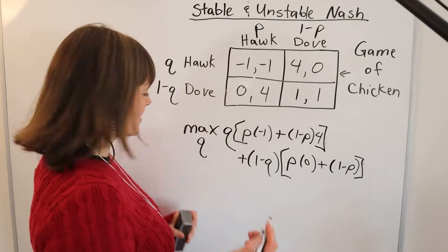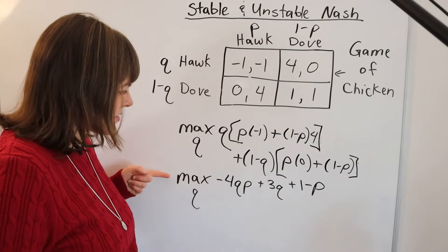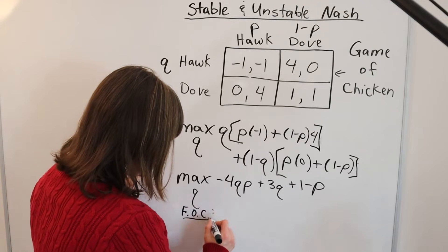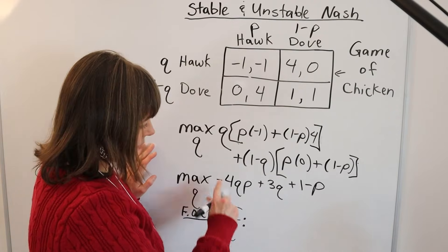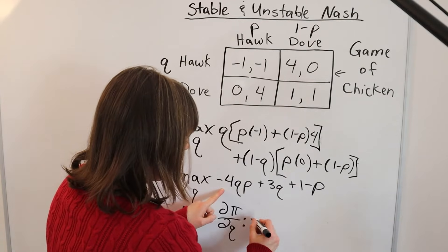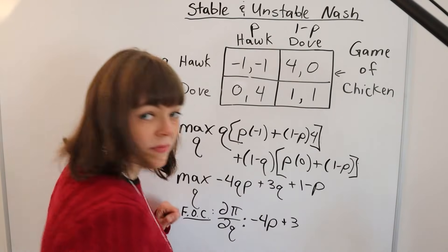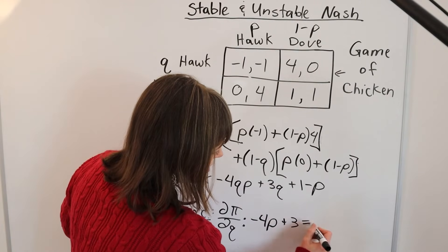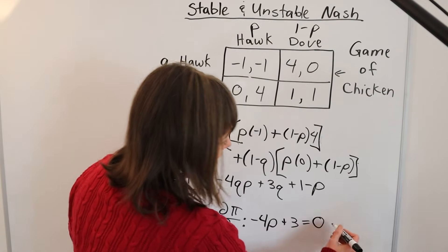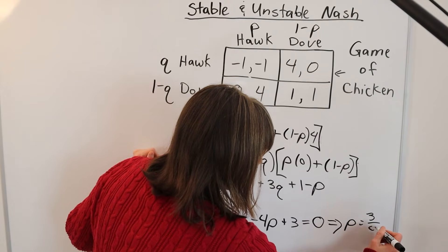Let me simplify this. All of this simplifies down, and then we take our first order conditions. The derivative of this payoff function with respect to Q equals -4P + 3. We set our first order condition equal to zero, and if you solve this equation, you get P equals three-fourths.